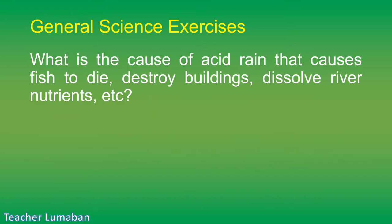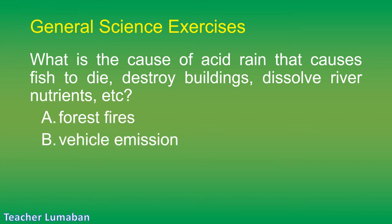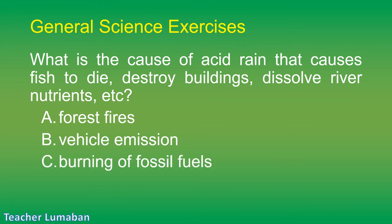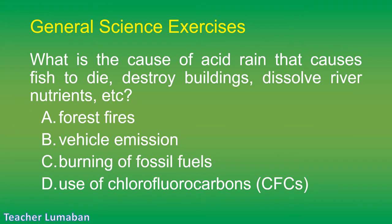What is the cause of acid rain that causes fish to die, destroy buildings, dissolve river nutrients, etc.? Letter A: forest fires. Letter B: vehicle emission. Letter C: burning of fossil fuels. Letter D: use of chlorofluorocarbons (CFCs).